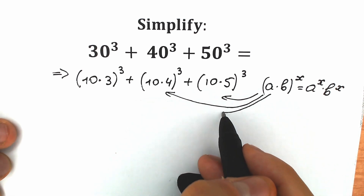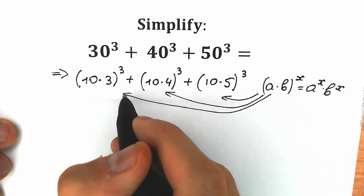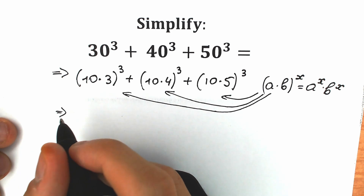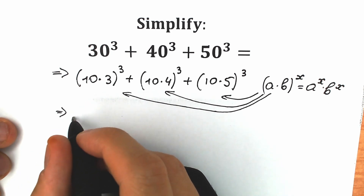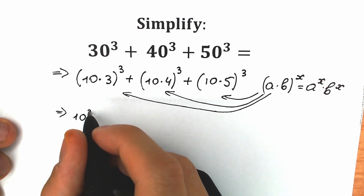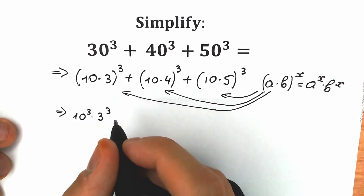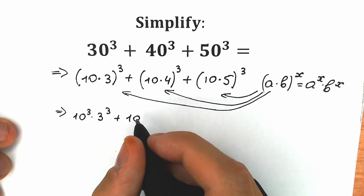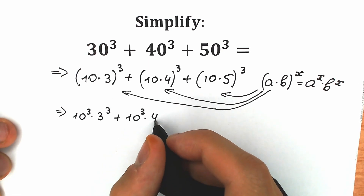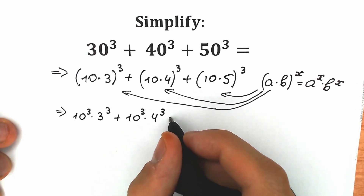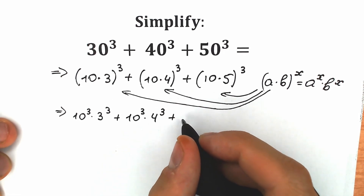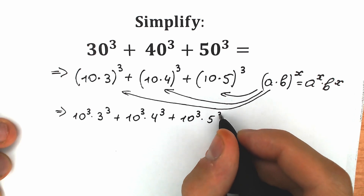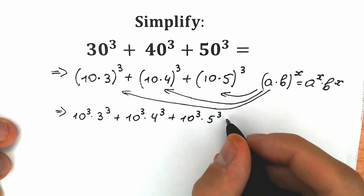We can easily apply this rule to each of these steps. As a result, we have 10 to the power 3 times 3 to the power 3, plus 10 to the power 3 times 4 to the power 3, and plus 10 to the power 3 times 5 to the power 3.